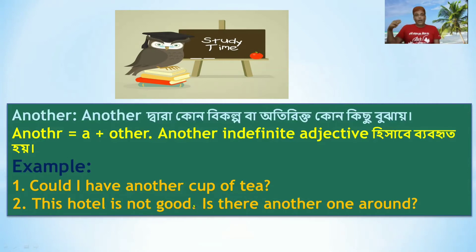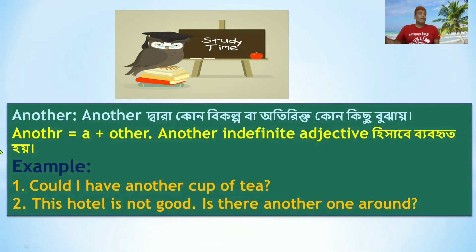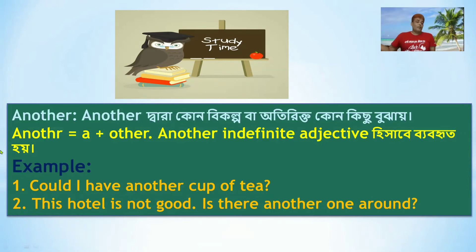Another example: if the hotel is not good, you can find another one. 'Is there another cup of tea?' — here 'another' refers to one additional or different item.